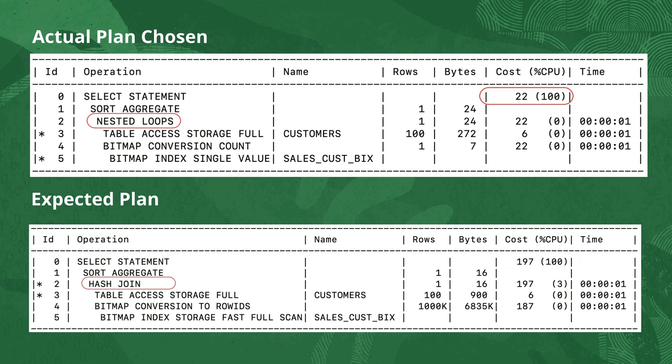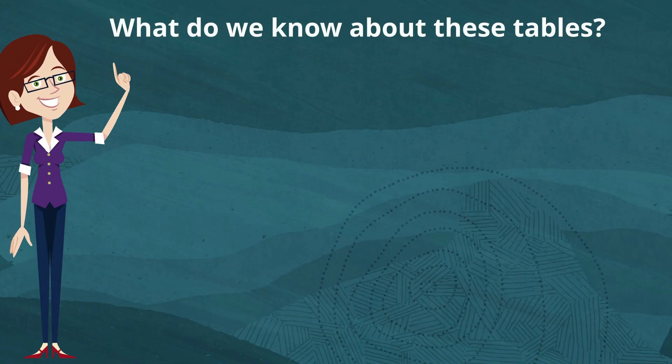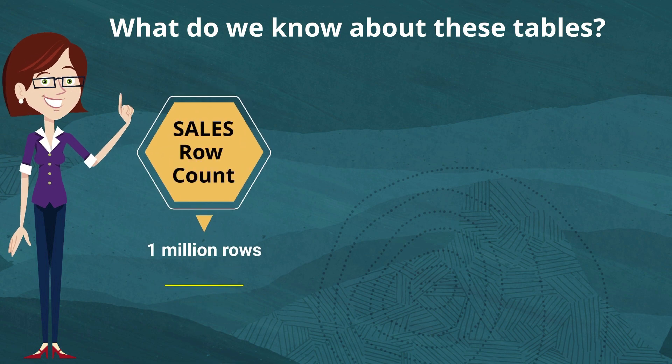If I forced the plan I was expecting, it turns out to be nine times more expensive, which is why it wasn't chosen by default. Since we didn't get the plan we wanted and we've got a performance problem, let's find out what additional information we can get about these tables. First off, the sales table has a row count of one million rows. So our assumption that it was a large table turns out to be correct.